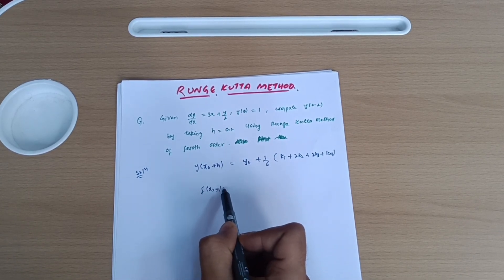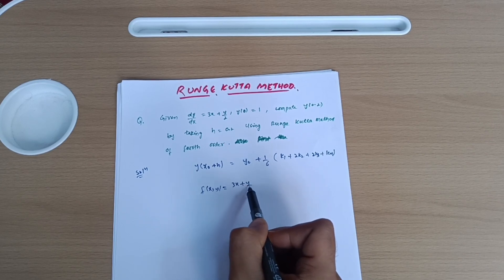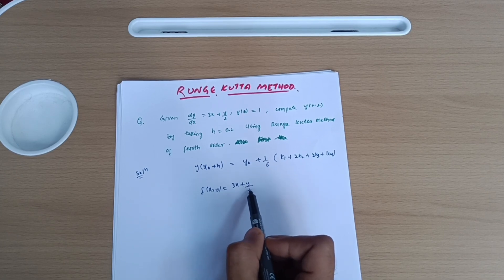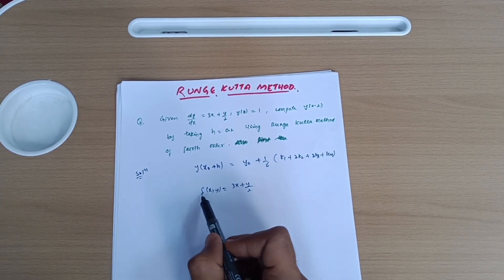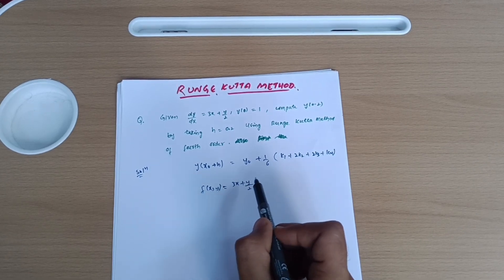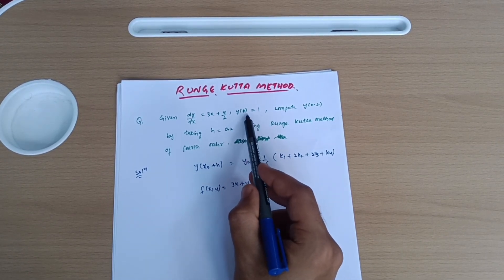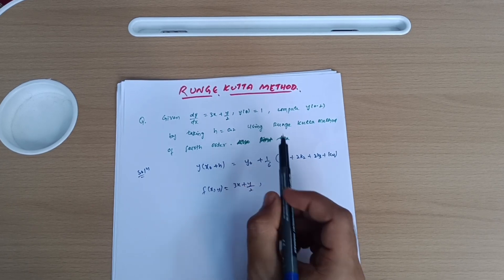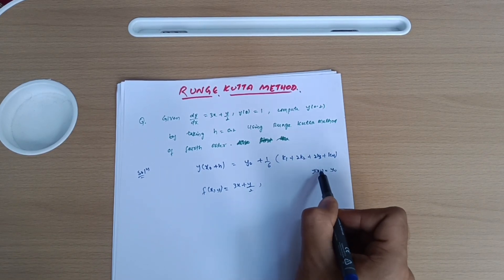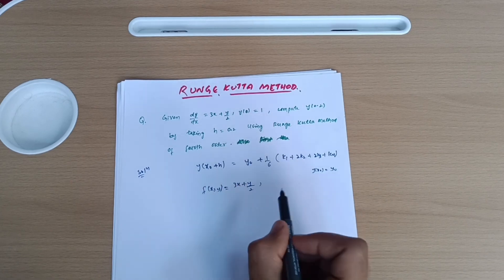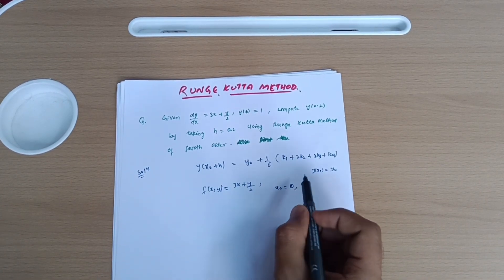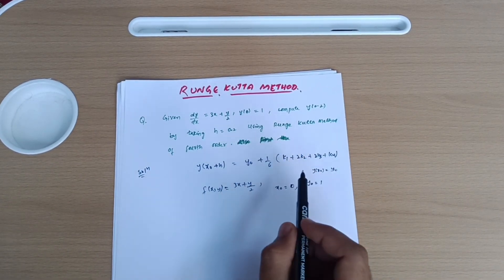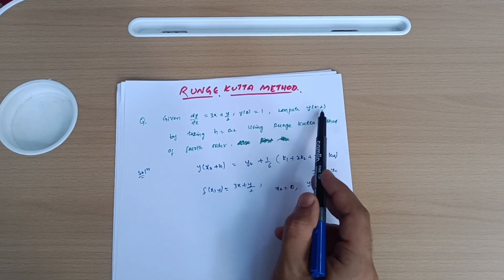What is given in the particular question is the function f(x, y) = 3x + y/2. I am telling this is the function of x and y — x is present with a constant and y is present with a constant. The boundary condition given is y(0) = 1, which in general is y(x₀) = y₀. So x₀ = 0 and y₀ = 1. We need to compute y(0.2), and the step size h = 0.2.